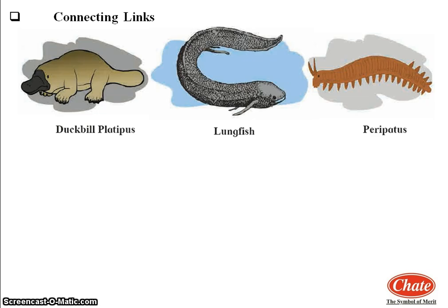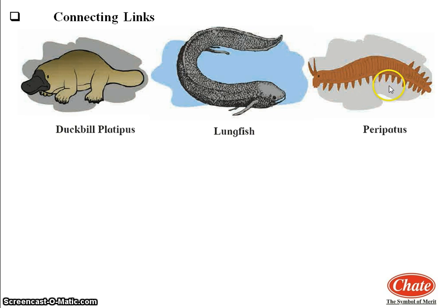There are some examples given related to connecting links, so we will do a discussion about them. After studying these examples, you can understand the meaning of the connecting link. Looking at the pictures on the screen, the first example is the duckbill platypus, the second one is lungfish, and the third one is peripatus. These three examples are of connecting links, and now one by one we will do a detailed study about each.